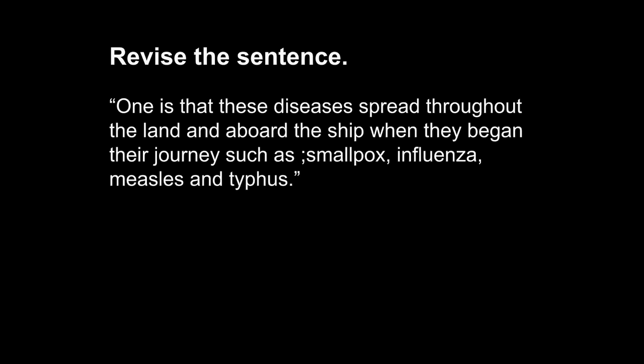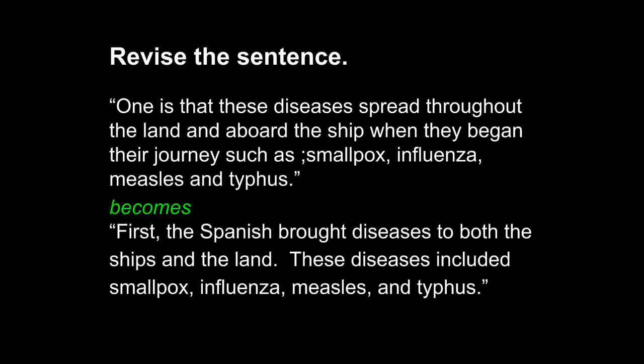Let's revise this sentence. The sentence states: One is that these diseases spread throughout the land and aboard the ship when they began their journey, such as smallpox, influenza, measles, and typhus. With our transformation, it becomes: First, the Spanish brought diseases to both the ships and the land. These diseases included smallpox, influenza, measles, and typhus. I've used a transition word 'first,' which leads me to a strong subject — 'the Spanish' as a group. Then I indicate a very strong effect: 'brought diseases.' That core statement is clear — it uses a transition word 'first' to indicate sequence in the paragraph, rather than using 'one' as a subject.